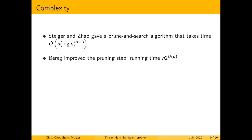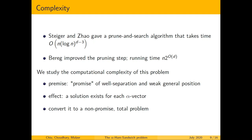Let's now talk about the complexity of this problem. Stiker and Zhao gave a pruned search algorithm to find the dividing hyperplane when the conditions of well separation and weak general position hold, and that takes a certain amount of time. This was later improved to be linear in n but still exponential in d. Our aim is to understand the precise computational complexity of this search problem. Under the promise of well separation and weak general position, we know there is always a solution for each alpha vector. However, this promise is very expensive to verify, so we would like to convert this into a non-promise problem.